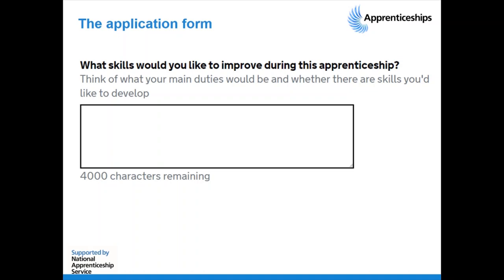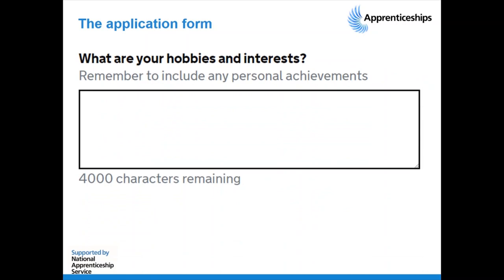The second common question is: what skills would you like to improve during this apprenticeship? Think about your main duties and responsibilities in that role and speak to areas you haven't already covered in your strengths. For example, applying for digital marketing, you might say you'd like to develop your video-making skills. Or: 'Although I'm a fantastic team player, I'd love the opportunity to learn to work more independently.' Always turn it into a positive — never say something negative like 'I'm really rubbish at being confident.'